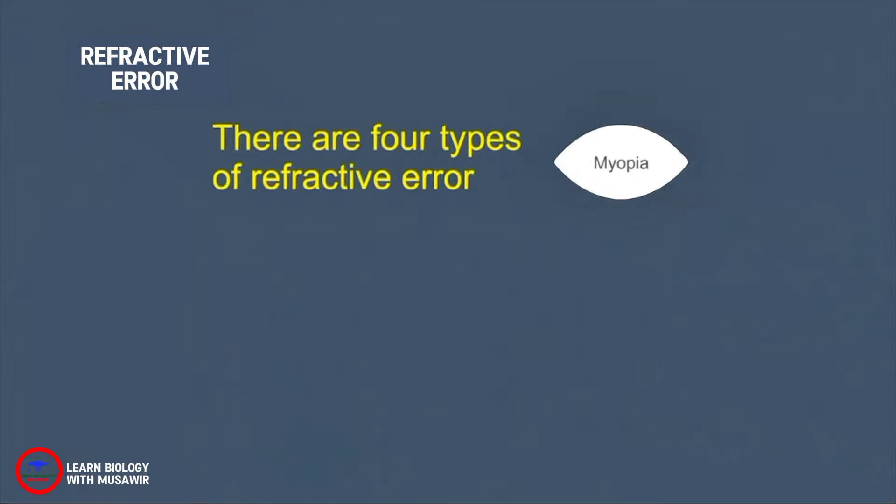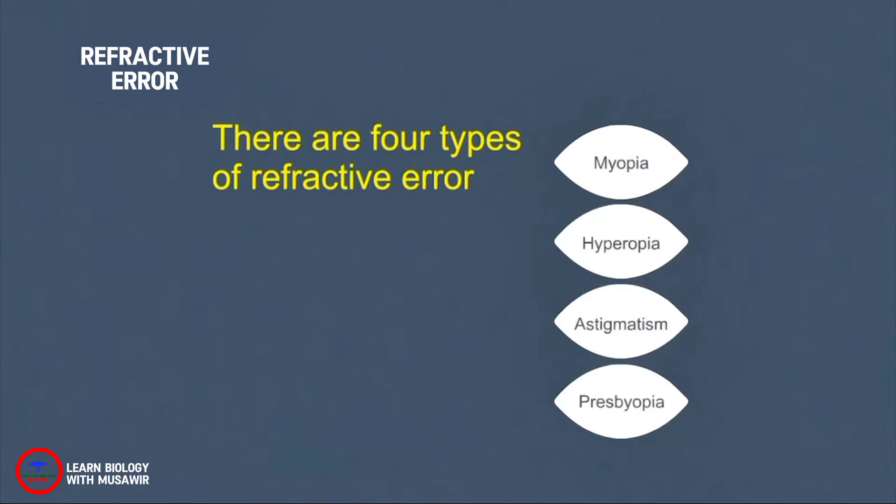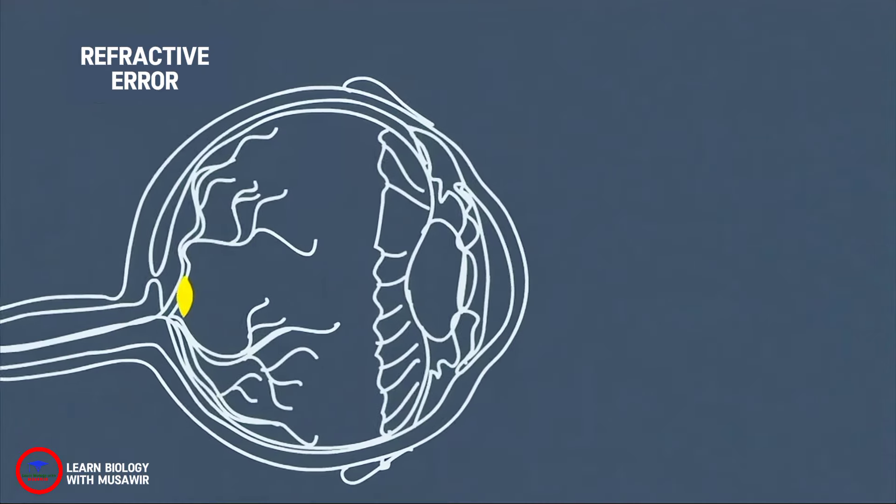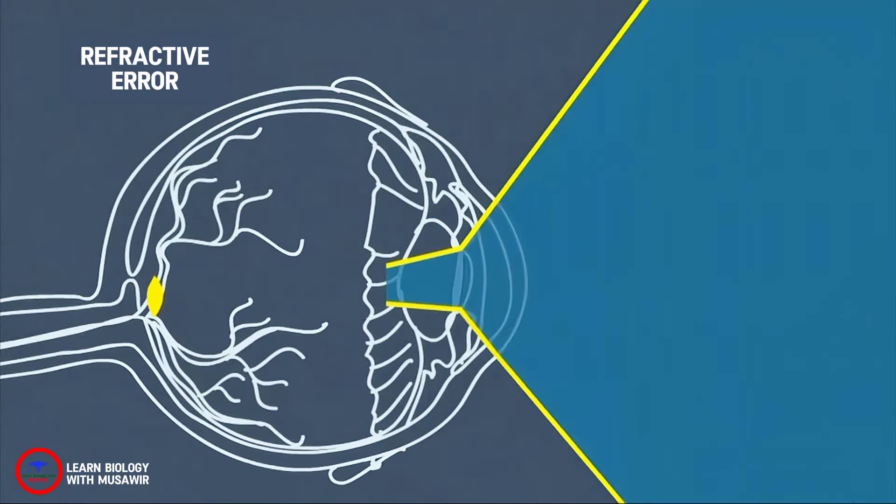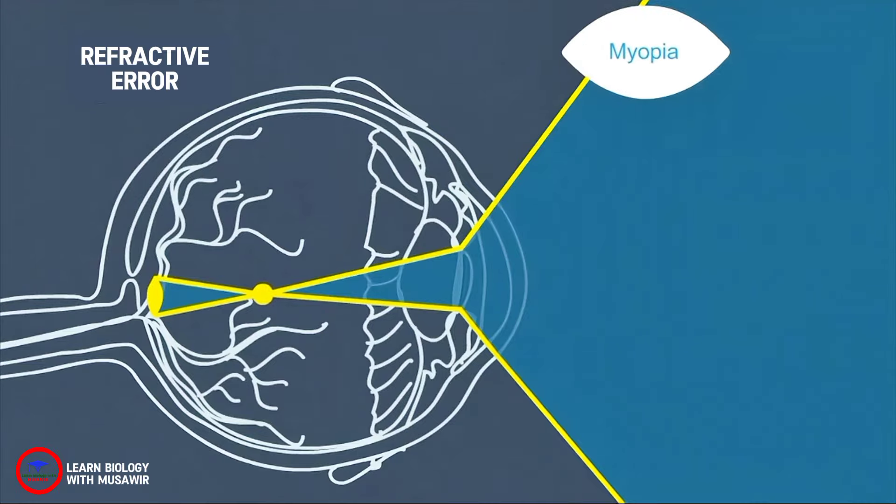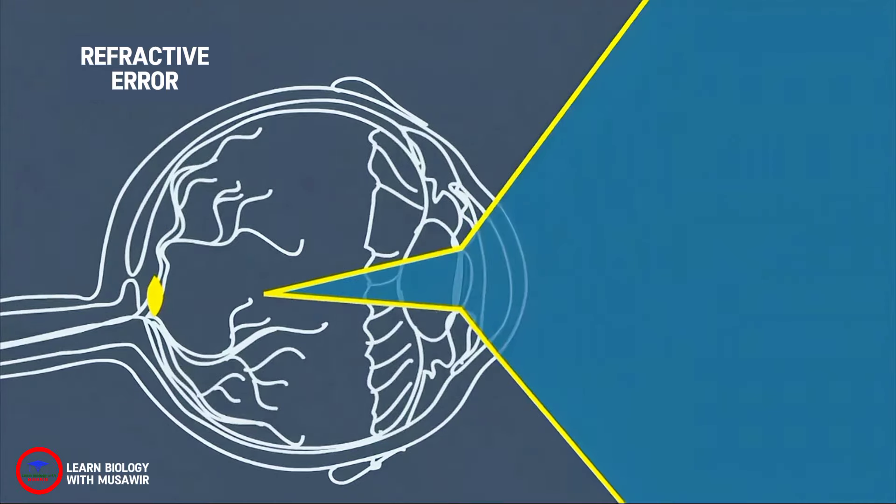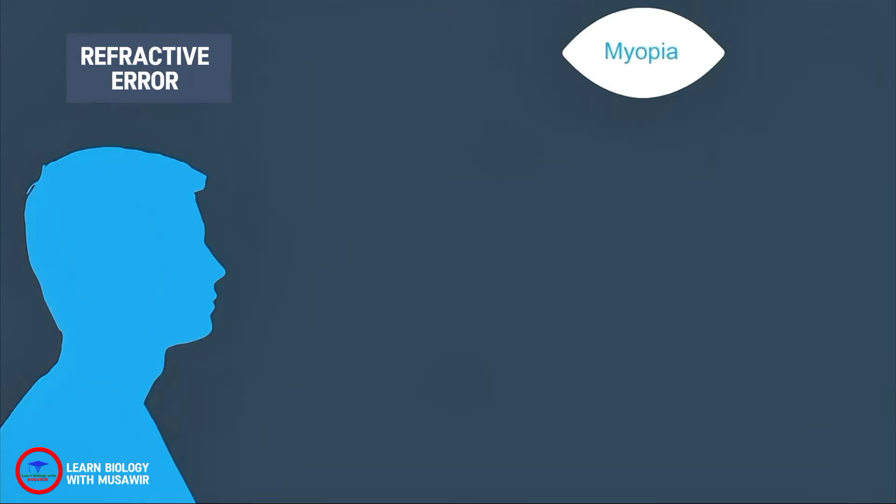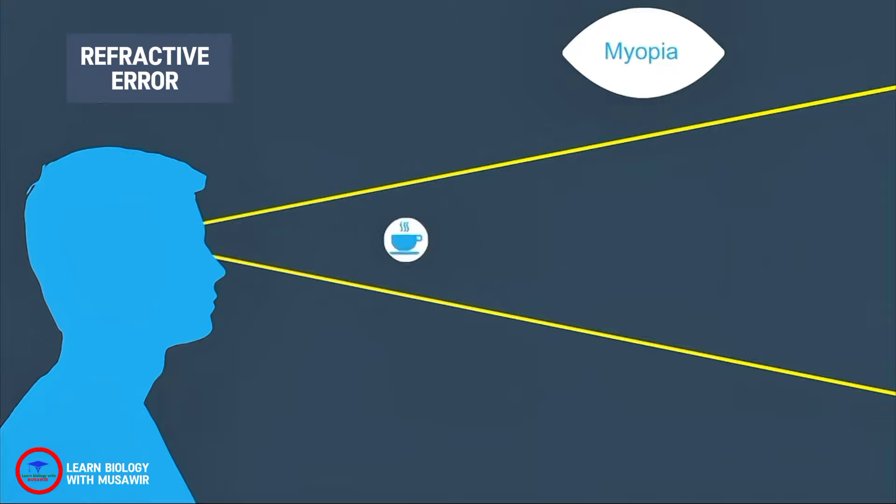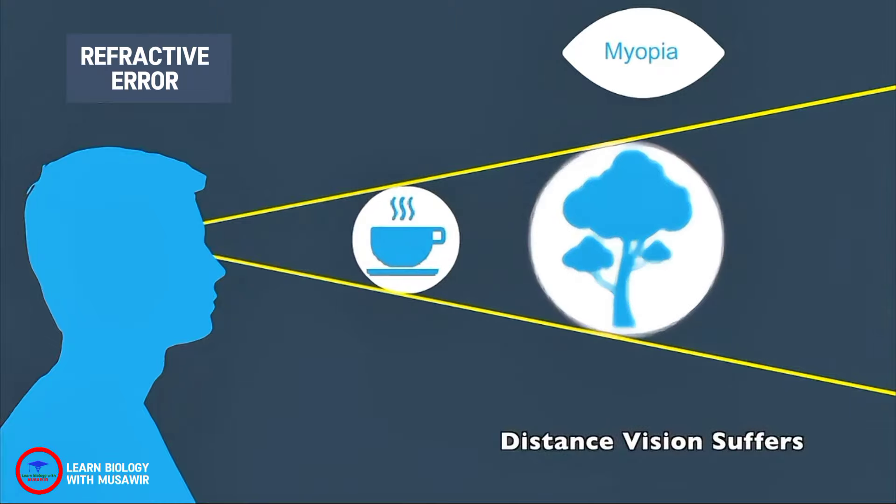When we can't see clearly, it is often caused by a refractive error. There are four types of refractive error. Myopia, or nearsightedness, is when the light rays focus in front of the retina instead of on it. This can happen when the eyeball is longer or there is a change in the focusing power of the cornea or lens. With myopia, closer objects will appear clear, but distant objects will appear blurred.